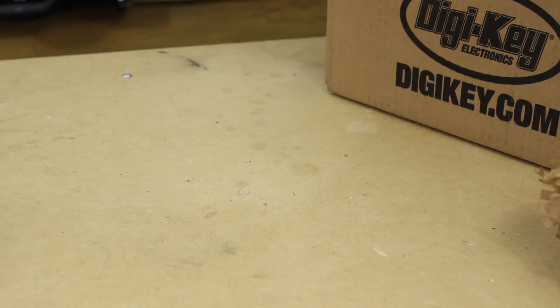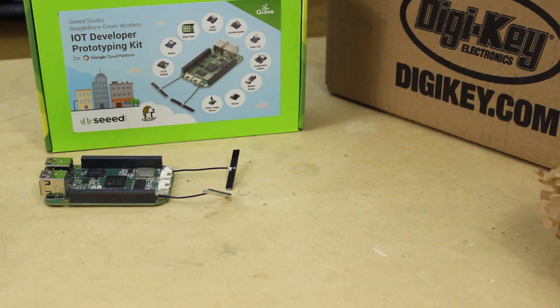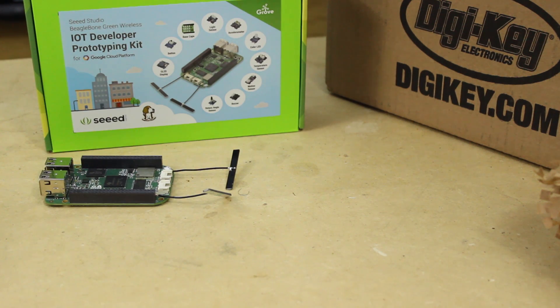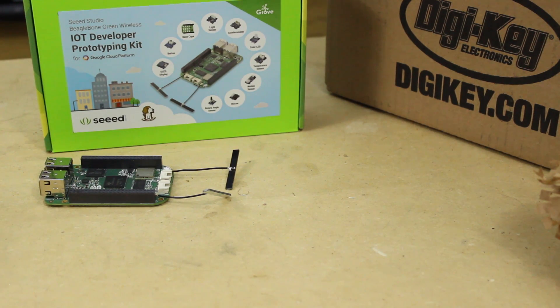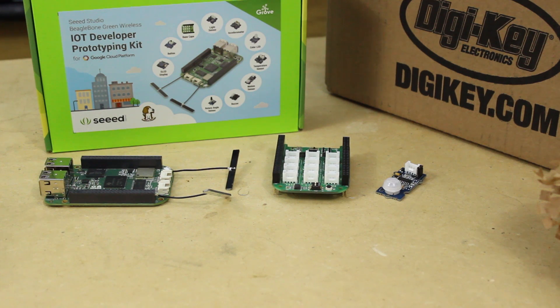So what exactly do we need? We'll need Seed Studios Beagle Bone Green Wireless Google IOT Kit. Within the kit, we'll use the Grove Cape, the Grove PIR sensor, the Grove push button, and the Grove OLED display.